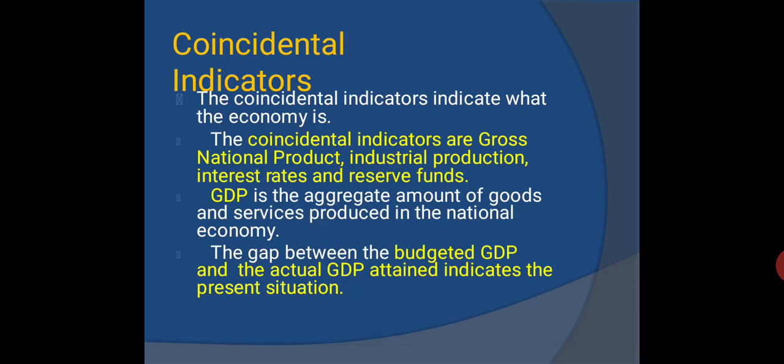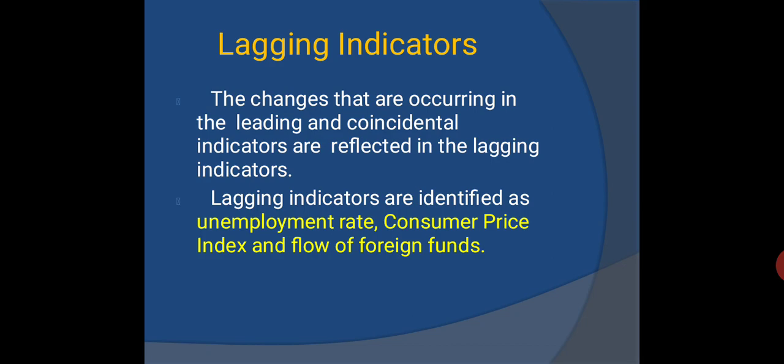Coincidental indicators indicate what the economy currently is. The coincidental indicators include gross national product, industrial production, interest rates, and reserve funds. GDP is the aggregate amount of goods and services produced in the national economy; the gap between budgeted GDP and actual GDP attained indicates the present situation. Lagging indicators reflect changes that are already occurring in the leading and coincidental indicators. Lagging indicators are identified as the unemployment rate, consumer price index, and flow of foreign funds.